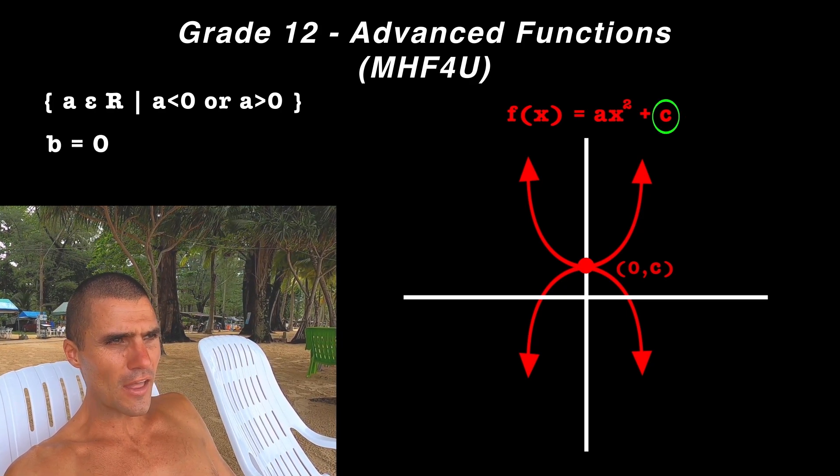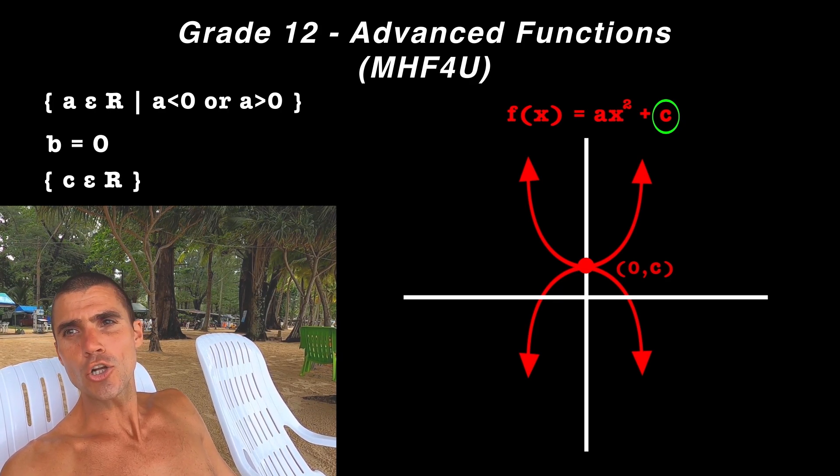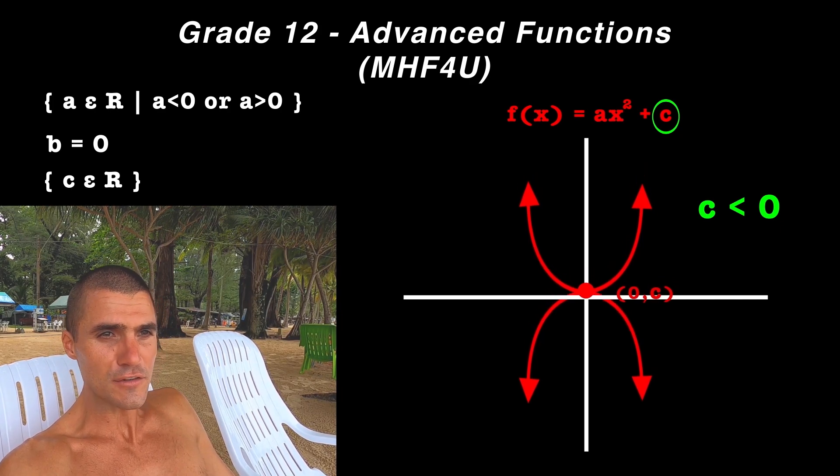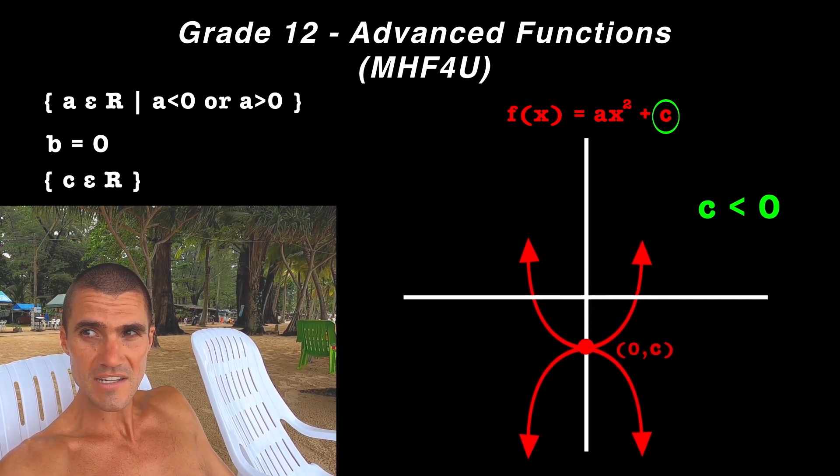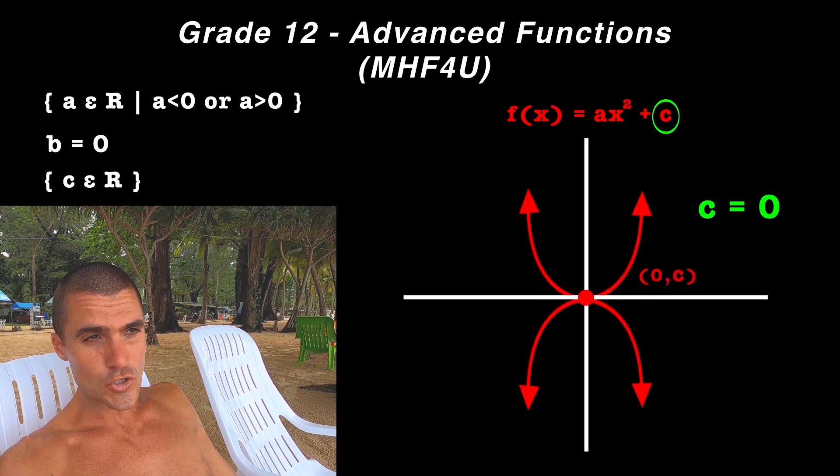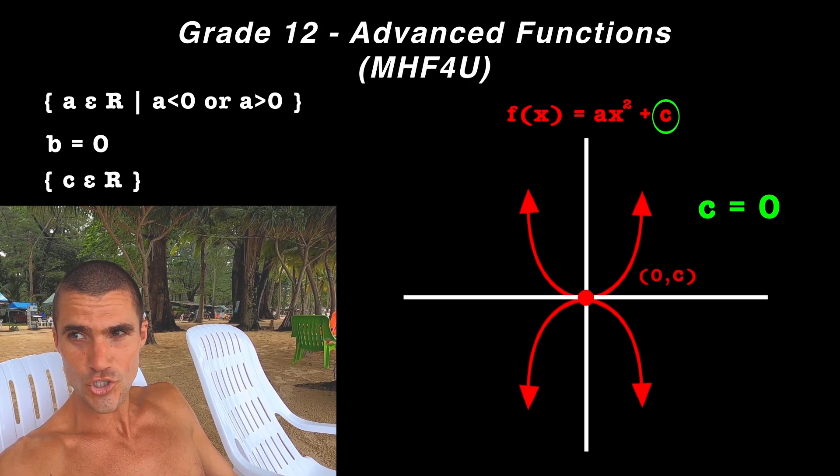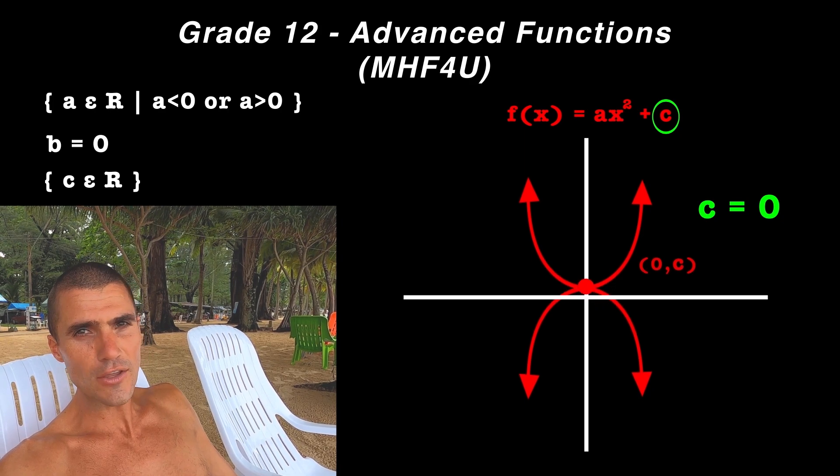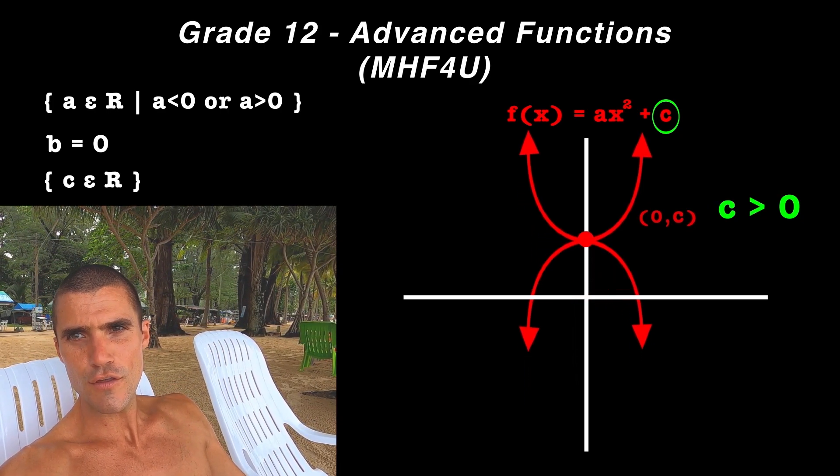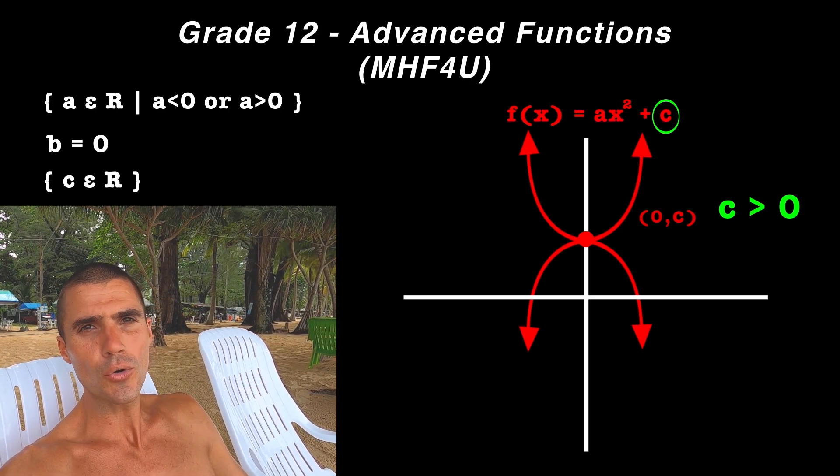The c value actually would have no restrictions. The c value can be any real number, including zero. So the c value could be negative, meaning that the vertex would be below the x-axis—it would have a negative y value. The c value could also be zero, which would ensure that the vertex is going to be at the origin at the coordinate (0, 0). And then the c value could also be positive, meaning that the vertex would be above the x-axis, or the y value of the vertex would be positive. So there are no restrictions on c.